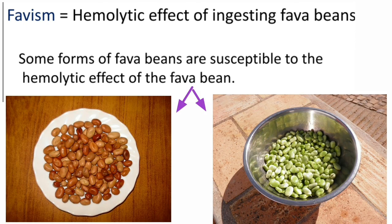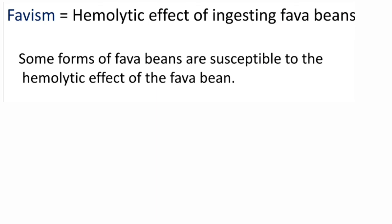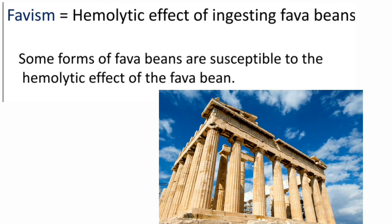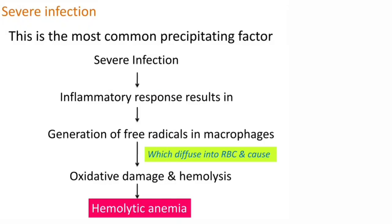Hemolytic anemia due to fava beans is called favism, meaning the hemolytic effect of fava beans. Some forms of G6PD deficiency are susceptible to this effect, and it is mostly seen in the Mediterranean region. The third and most common precipitating factor is severe infection. Severe infection leads to an inflammatory response, which generates free radicals in macrophages. These free radicals diffuse into RBCs, causing oxidative damage and hemolysis, resulting in hemolytic anemia.